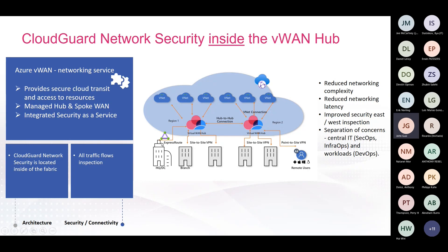If you look at the diagram here, customers can have the data center connect to Azure VWAN via ExpressRoute, and traffic going into the VNet will be protected by CloudGuard network security, along with branch-to-branch traffic. For customers who have many branch offices — I've met customers with more than 50 branch offices already connected to VWAN — we now have the ability to protect that traffic. We also protect traffic from remote VPN users using Point-to-Site VPN connecting into the VWAN.